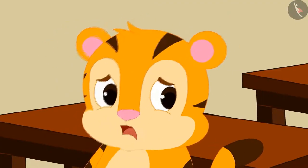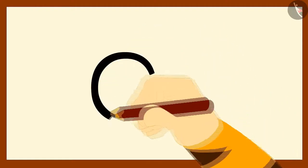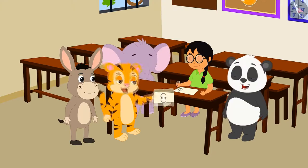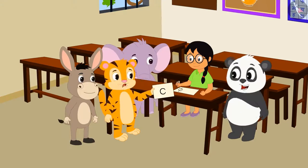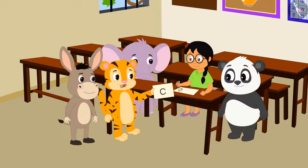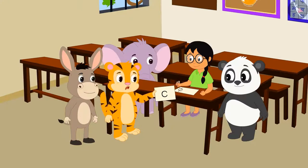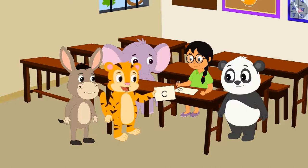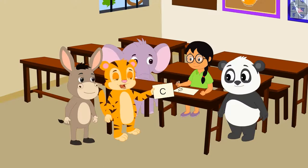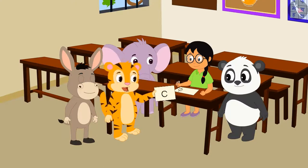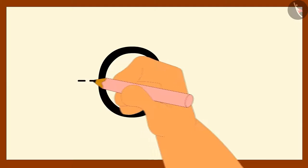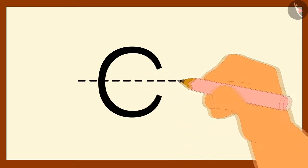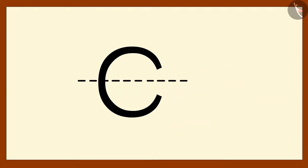Shere Khan draws a C on a paper and shouts: If your magic is better than my magic, then can you divide this C into two similar parts with the help of a dotted line? Meenu smiled and drew a dotted line on Shere Khan's C.